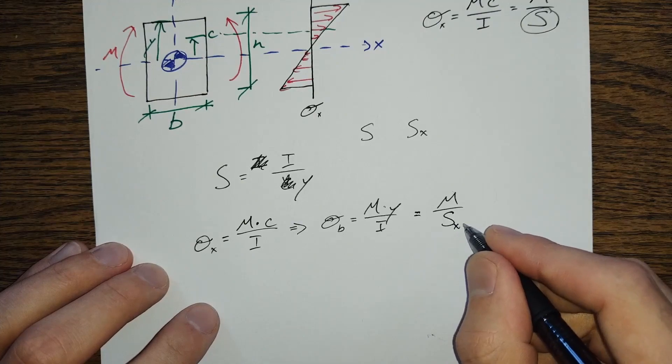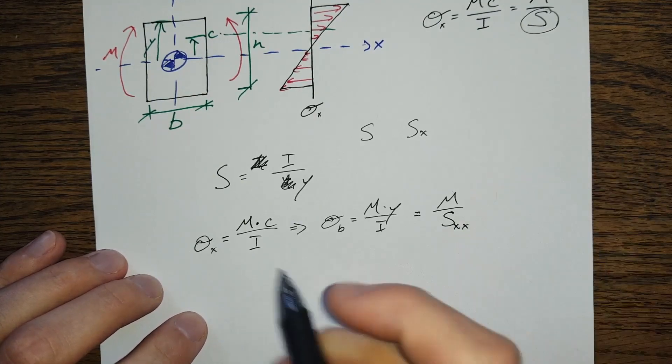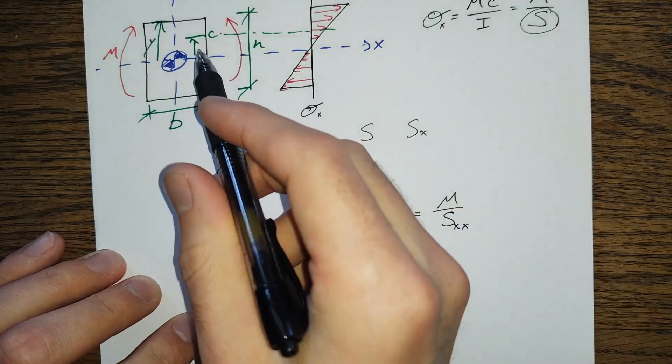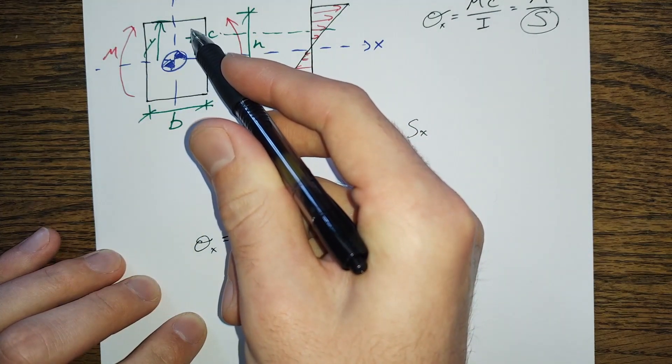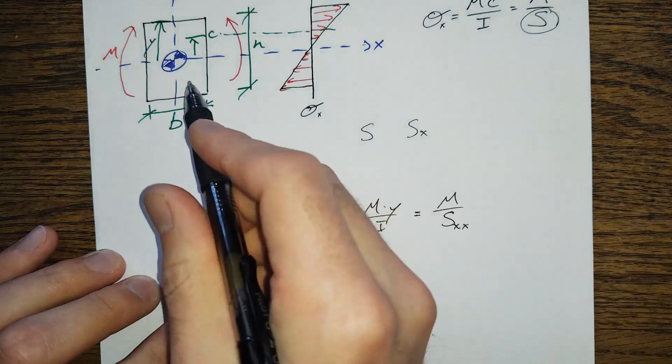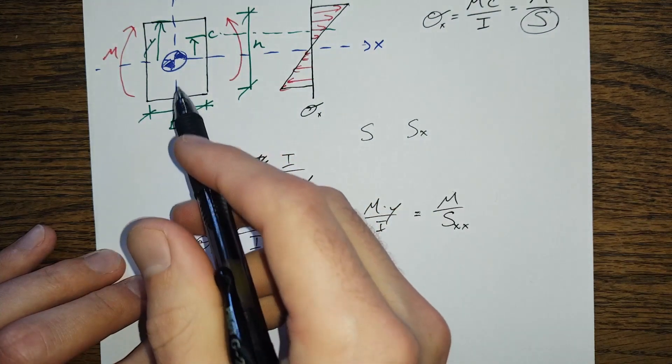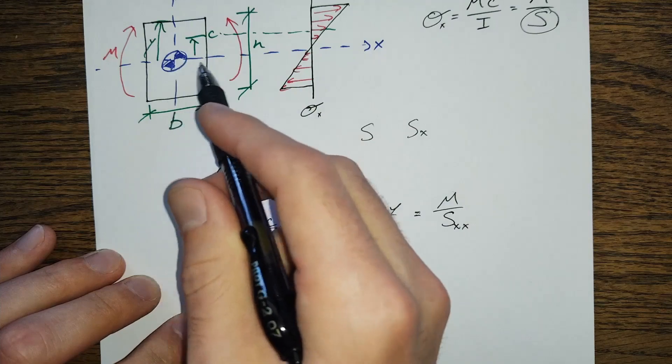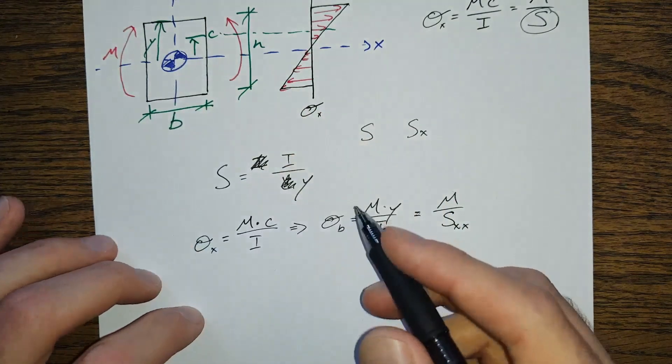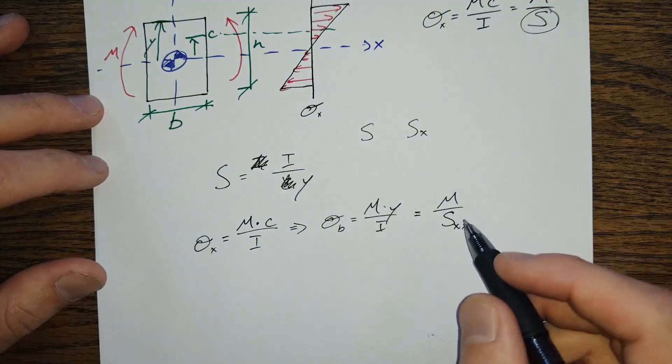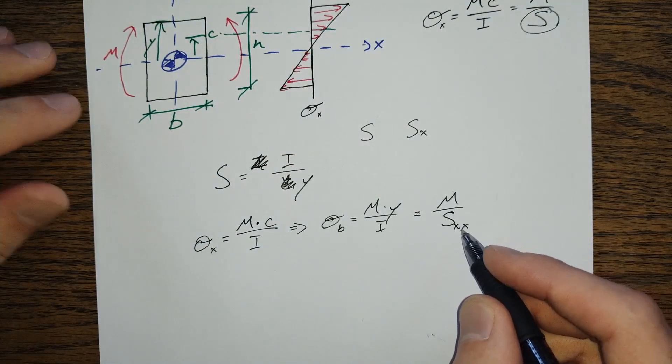And this S is related to the coordinate system. So there's an SX, it's IX divided by Y. There is also an SY, which is your IX divided by X, or your IY divided by X, it would be in this direction. And in this case, I'm just putting SXX, right?